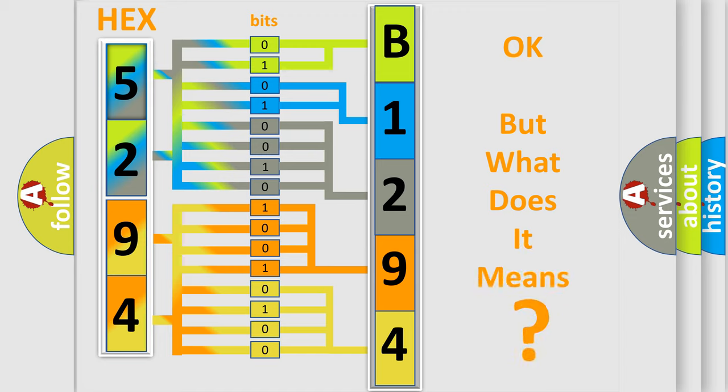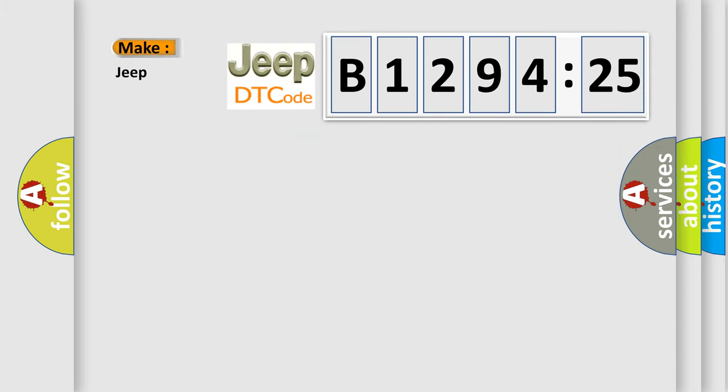The number itself does not make sense to us if we cannot assign information about what it actually expresses. So, what does the diagnostic trouble code B129425 interpret specifically for Jeep car manufacturers?